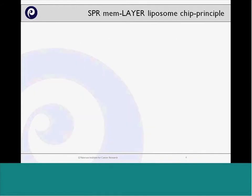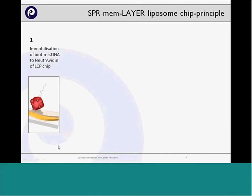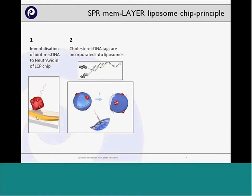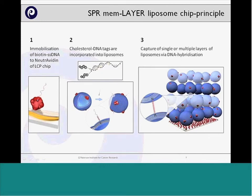Here is more detail on how this principle works. First, you capture a biotinylated single-strand DNA molecule onto the LCT chip surface. At the same time, you prepare the liposomes as usual — 98% carrier lipid and 2% phosphoinositide — and also add a DNA tag which has two cholesterol molecules that are hydrophobic and insert into the lipid bilayer structure. Those cholesterol molecules are connected to a DNA molecule that is partly double-stranded but has a single-stranded overhang that is complementary to the single-stranded DNA on the LCT chip, allowing capture of those liposomes onto the chip surface via DNA hybridization.